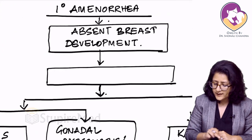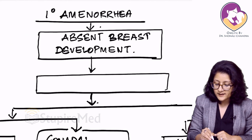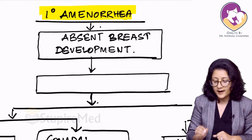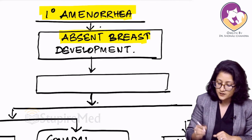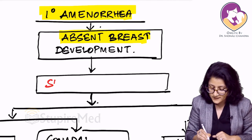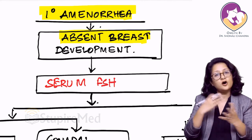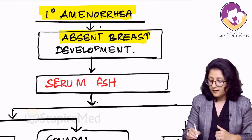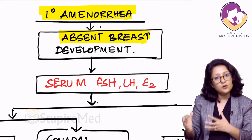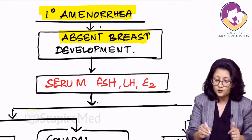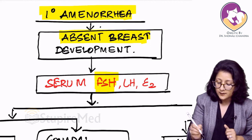Look at the flowchart here — this will help us understand. Whenever there is primary amenorrhea and absent breast development, the next step is to perform serum FSH. We go for a full hormonal profile — FSH, LH, estradiol. But if you have to choose one, it has to be FSH, which is very, very important — the most important.